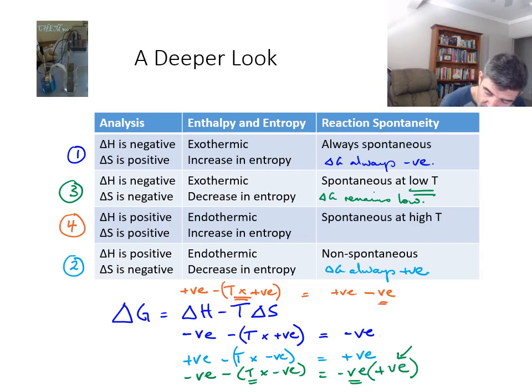So we're going to have a positive minus a negative value. So as long as the magnitude of this is now large enough to ensure that we have a negative value, then we're going to have a spontaneous reaction. So therefore, the T delta S has to be large.